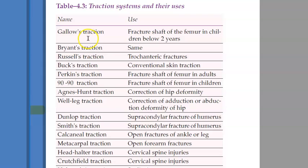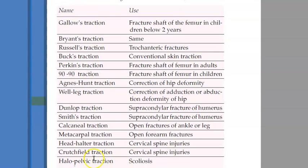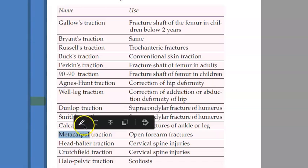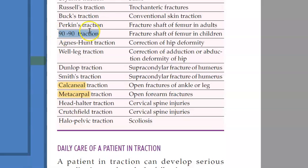There are many named tractions. You can look at these — there is Dunlop traction, calcaneal traction, metacarpal traction. Based on the bone name, it is easy to remember. There is also 90-90 traction and halopelvic traction.